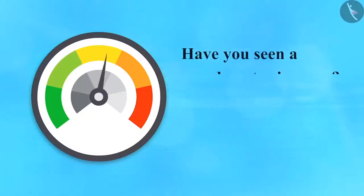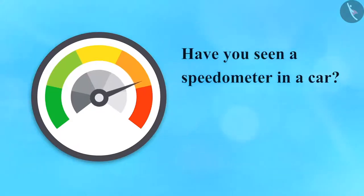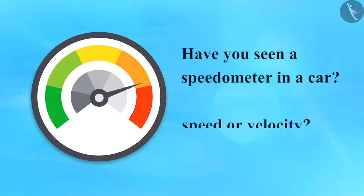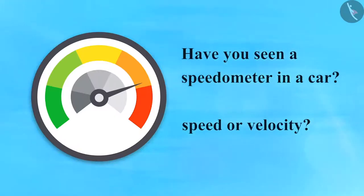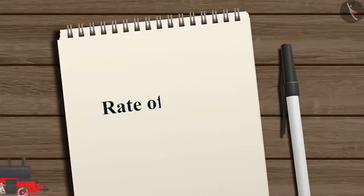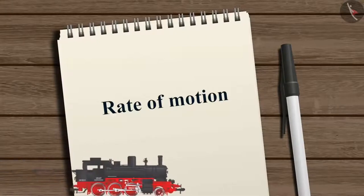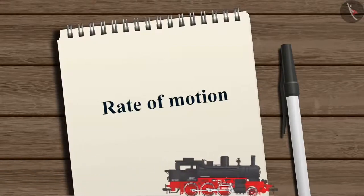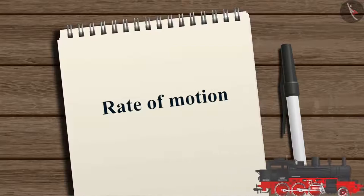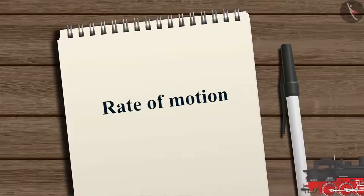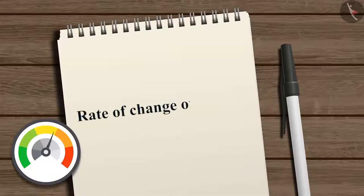Have you seen a speedometer in a car? What does it measure — is it speed or velocity? Now let's study the rate of change of velocity. Suppose a car is in uniform motion on a straight road; its velocity doesn't vary with time and remains constant, so the change in velocity with respect to time is zero.